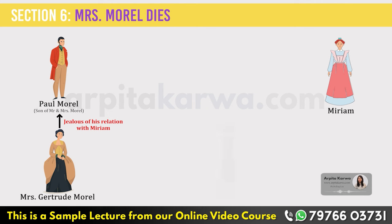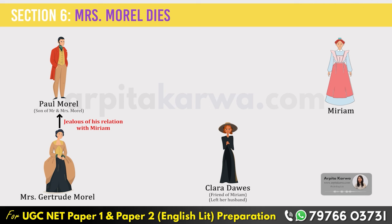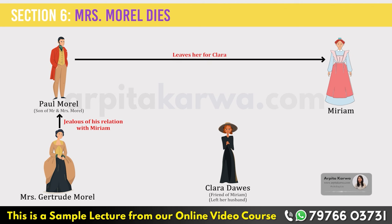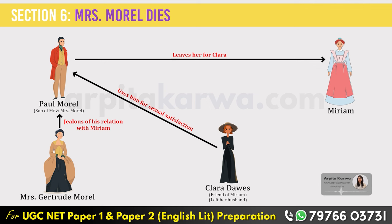The story moves forward: Miriam had a friend named Clara Dawes, who was married but had left her husband. After meeting Clara, Paul got attracted to her and broke up with Miriam to be with Clara. They were passionately in love with each other. However, Clara was just using Paul for her sexual satisfaction and didn't want to marry him. Meanwhile, Paul's mother Mrs. Morrill got ill, and Paul spent time taking care of her. Unfortunately, Mrs. Morrill died.